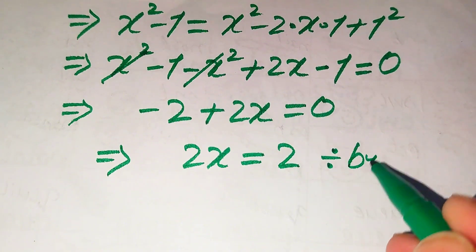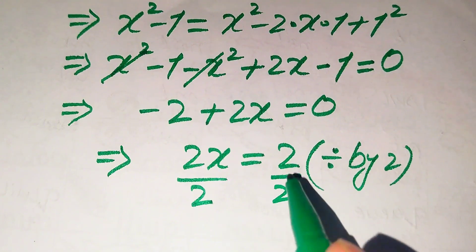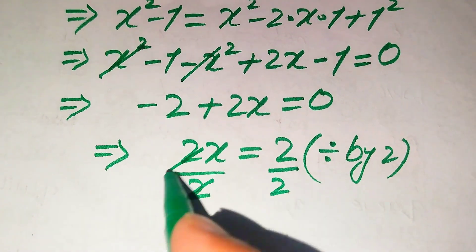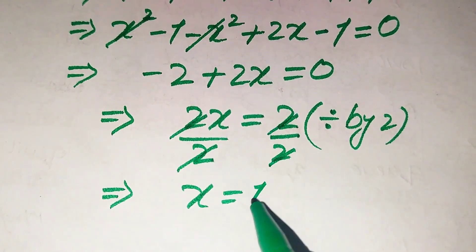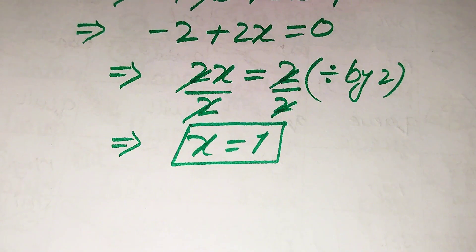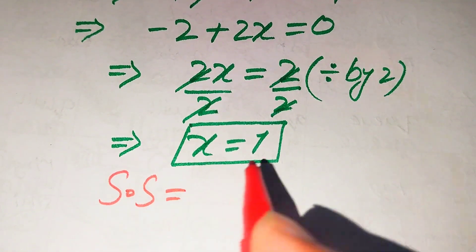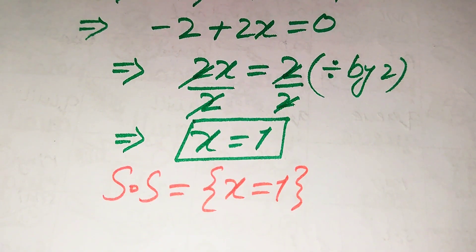We divide both sides by 2: 2x divided by 2 equals 2 divided by 2, so x equals 1. In the second method we again get x = 1. Since we already verified this value satisfies the given equation in the first method, we conclude the solution set is {x = 1}. Thank you so much for watching. Please subscribe to my channel for more exciting videos.